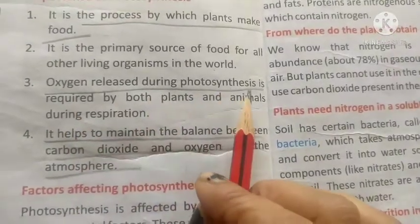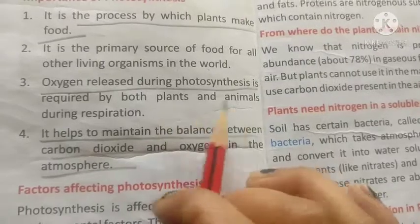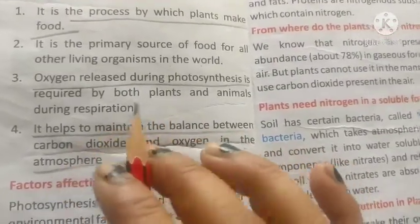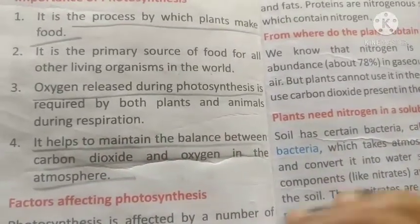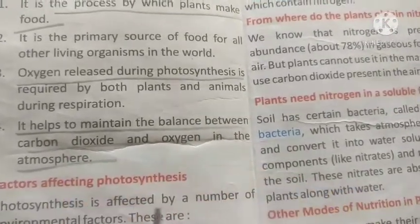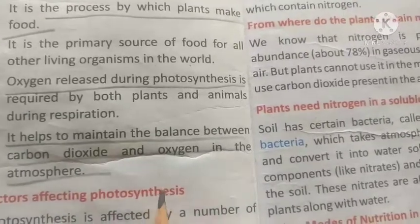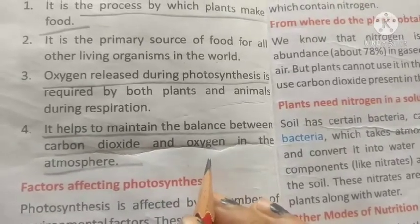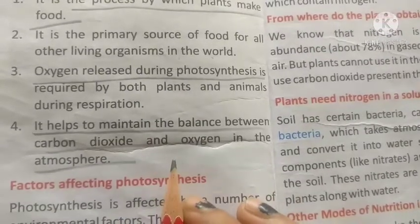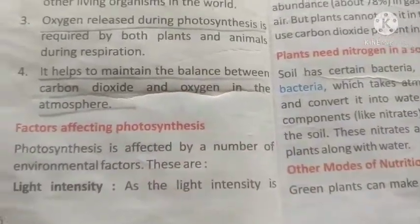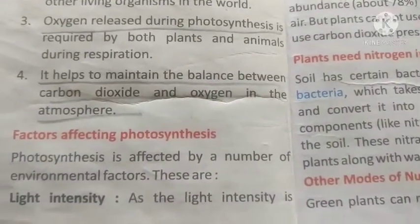Oxygen released during photosynthesis is required for both plants and animals during respiration. Photosynthesis also helps to maintain the balance between carbon dioxide and oxygen in the atmosphere. When plants absorb carbon dioxide and release oxygen, it keeps the atmospheric balance stable.